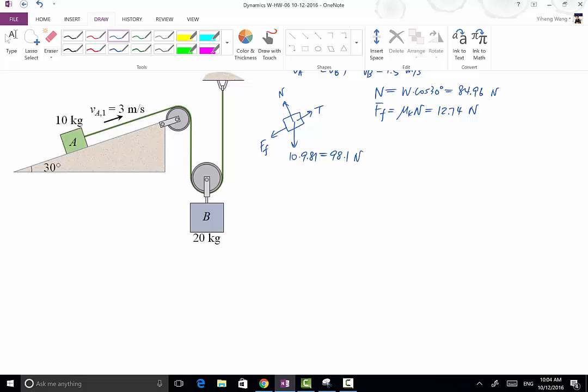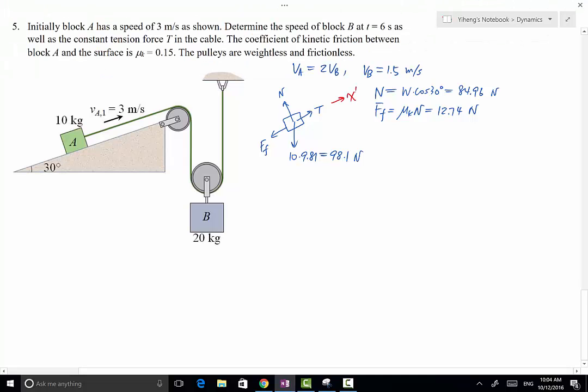So now, if we choose to summarize the linear momentum and impulse along the X' direction, along the X' direction for block A, we have MA times Vx' 1, plus we have integration of F dt. But in this case, because all our forces are constants, we can just simplify that to F times t. So total force along the X' direction times t equals MA times Vx' A2. So MA is 10, Vx' A1 is 3.